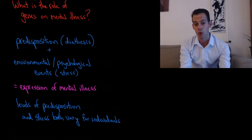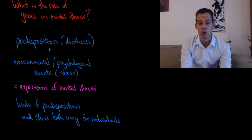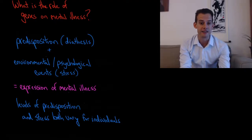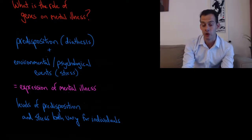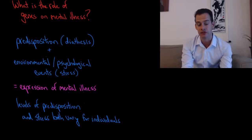What this diathesis stress model helps us to understand is why some individuals might suffer from a particular mental illness while others don't. The idea is that they'll have different levels of predisposition for that illness but also different levels of environmental stress that might influence the expression of that illness.